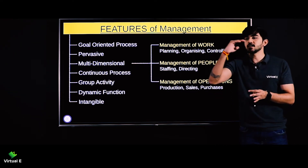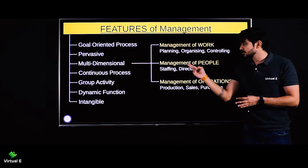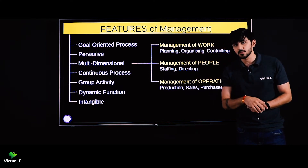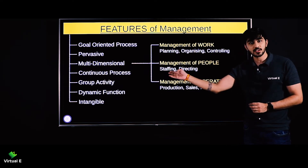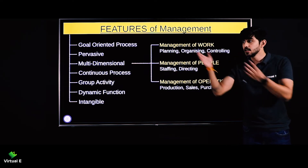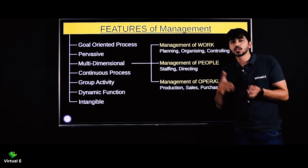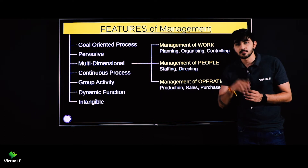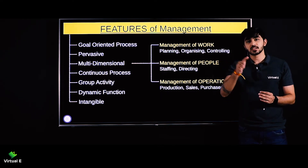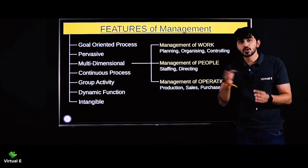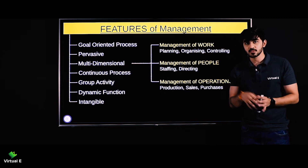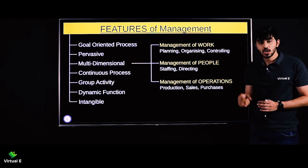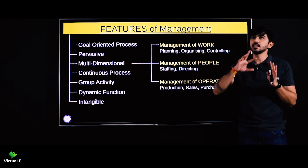Next is management of people. Kaam karane ke liye koi to chahiye. Management ki definition mein hume pada: getting things done by others. To others kaun hote hain? The employees of your company. Kaise karenge? Staff karenge — unko staff karne ka matlab hota hai job ke liye unhe apni organization mein invite karna. And what is directing? Basically to direct them — unko batana ki koi kaam kaise karna hai, how to supervise them, motivate them, lead them, communicate with them. That is all management of people.